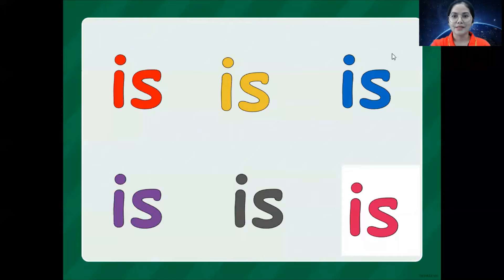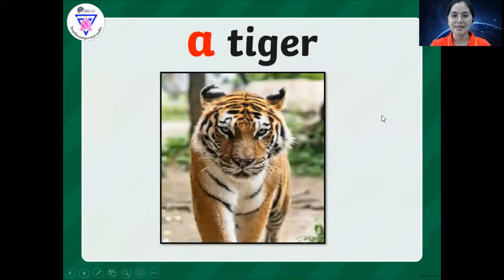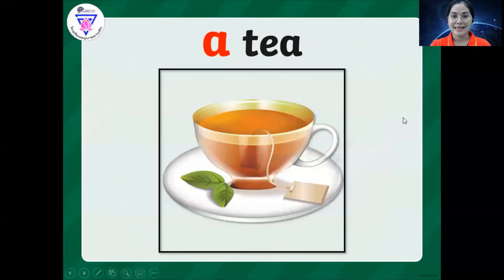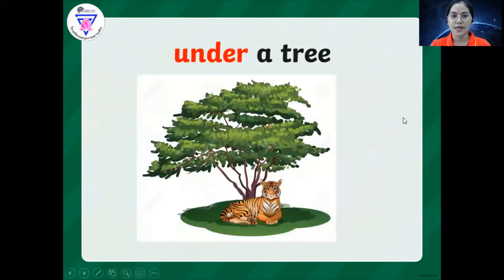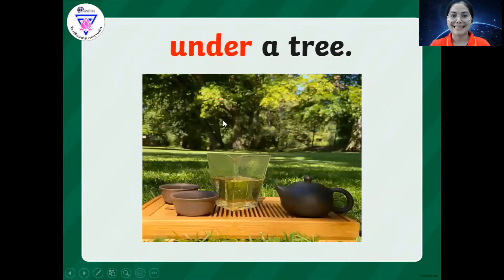Next, we also have here — yesterday I taught you about the sight word a and tiger. So that is our vocabularies and the letter T: a tiger, a tent, a tree, a tea. And of course the sight word under — under a tree. A tent under a tree.